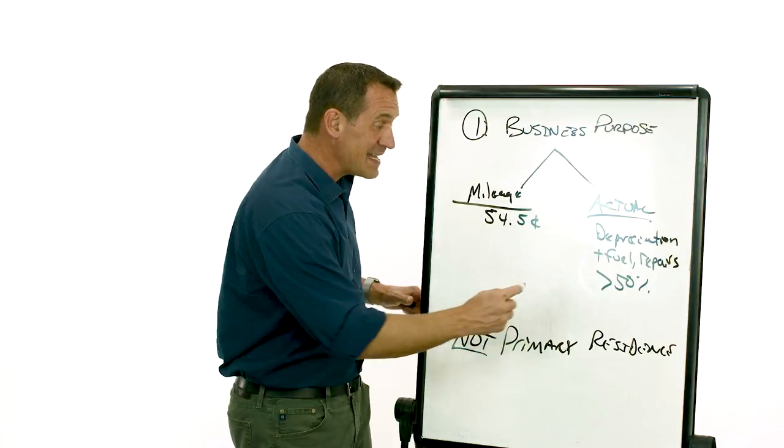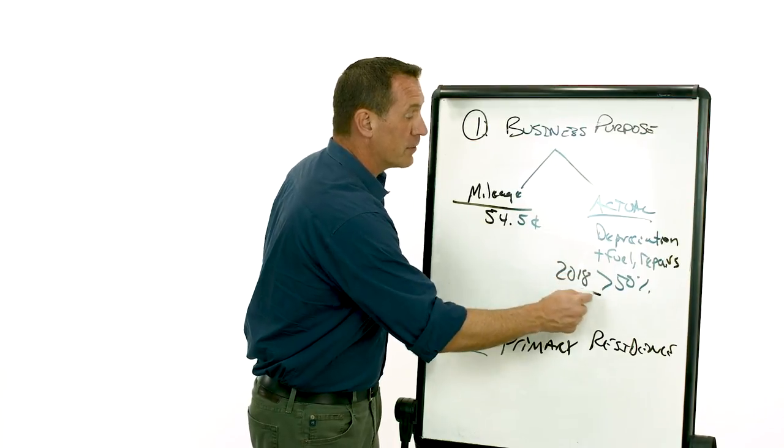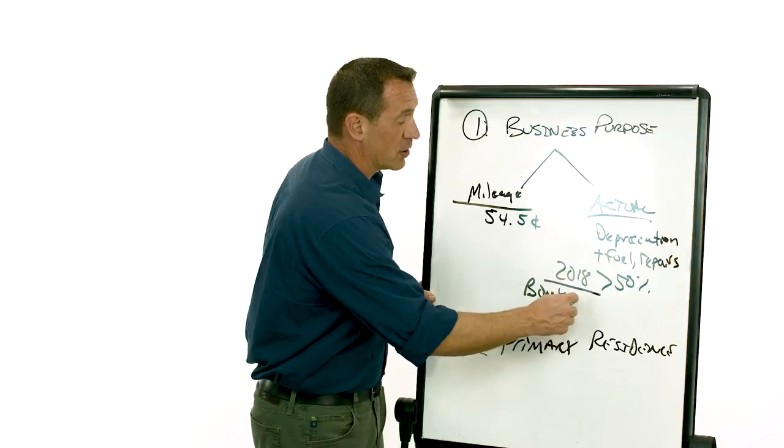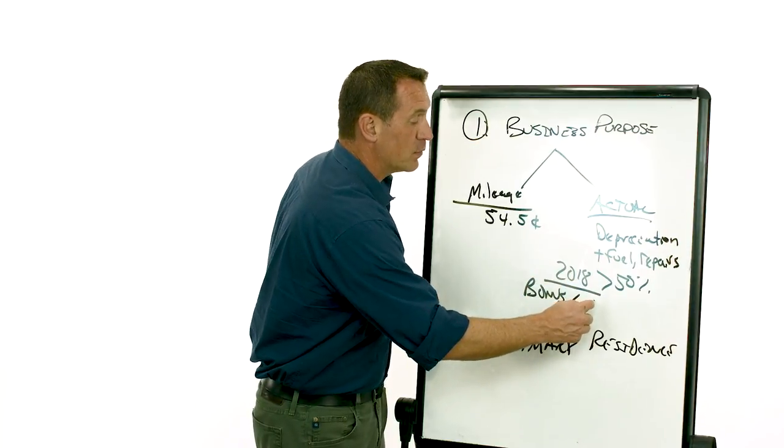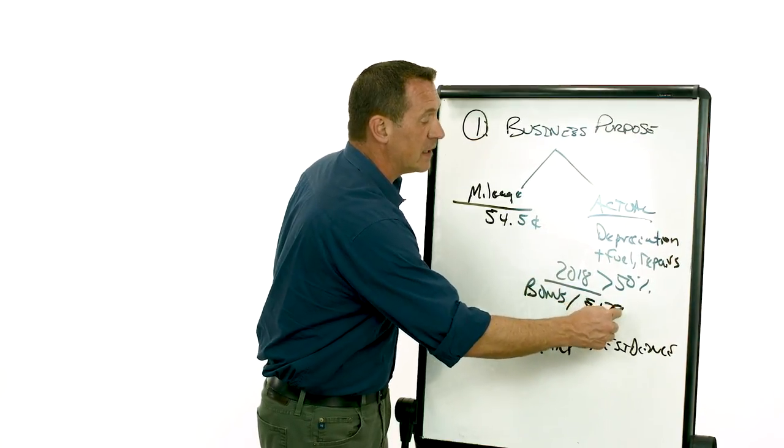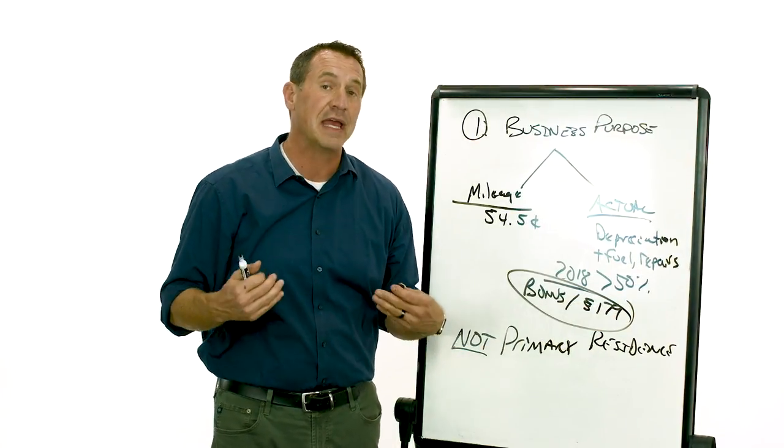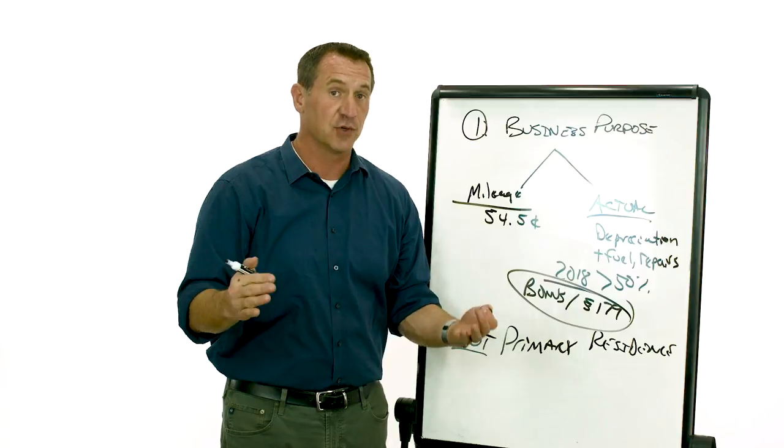Now last little trick that's pretty cool in 2018. There is what's called bonus depreciation, and in the year you purchase the RV, you might even get what's called Section 179. So these are ways to write off the RV even faster if you're buying it new or used.